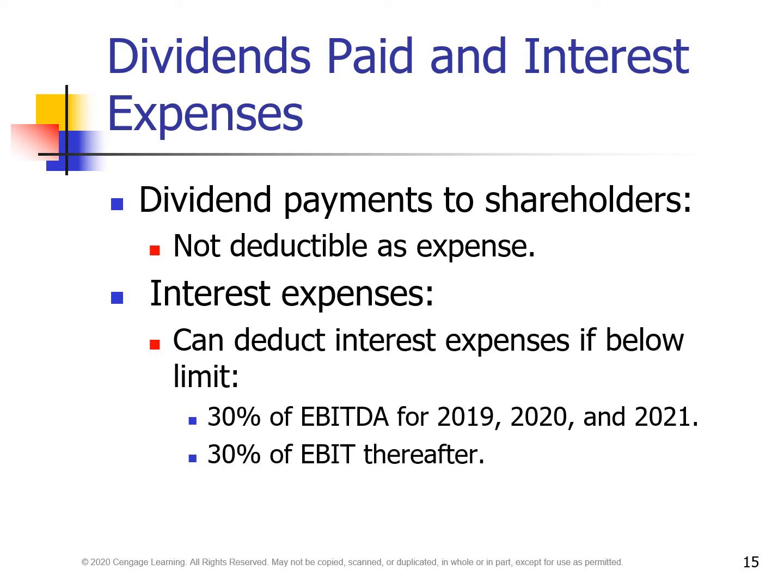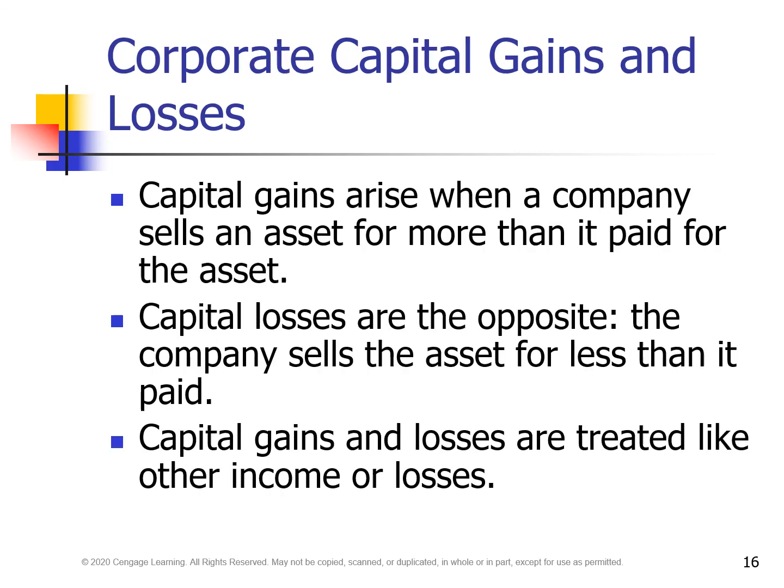Dividends paid and interest expenses: dividend payments to shareholders are not deductible as expenses. Interest expenses can be deducted if below the limit — 30% of EBITDA for 2019, 2020, and 2021, and 30% of EBIT thereafter. Corporate capital gains arise when the company sells an asset for more than it paid. Capital losses are the opposite — the company sells the asset for less than it paid. Capital gains and losses are treated like other income and losses.